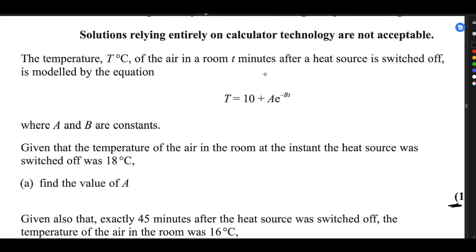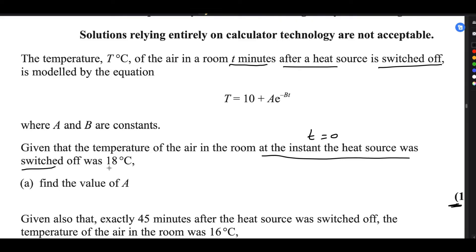In this equation, t is the time after the heat source is switched off. Therefore, at the instant the heat source is switched off, time is 0. And the temperature is 80 degrees Celsius. So if you substitute these two values into the equation, you will get the answer for A.